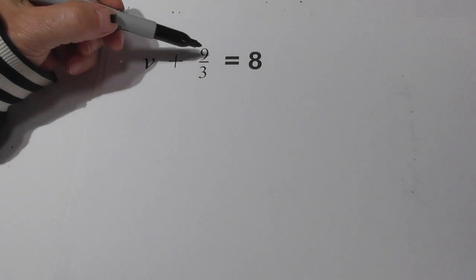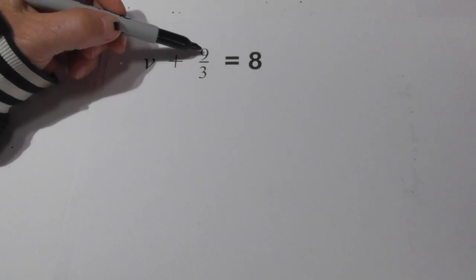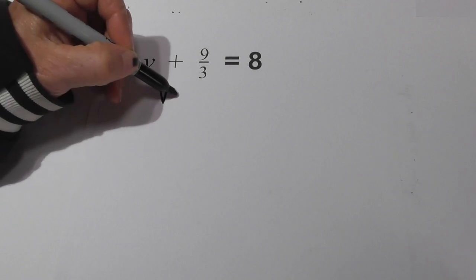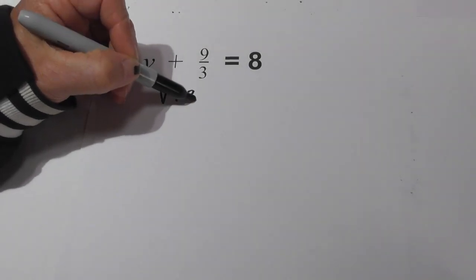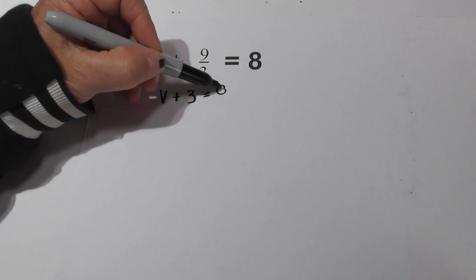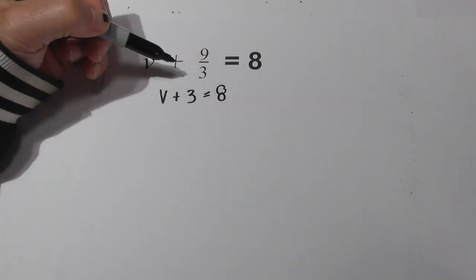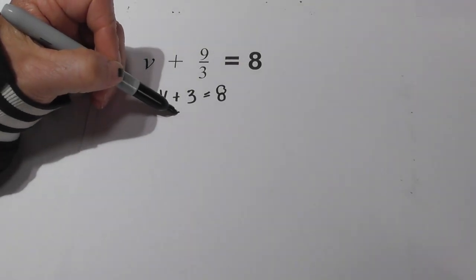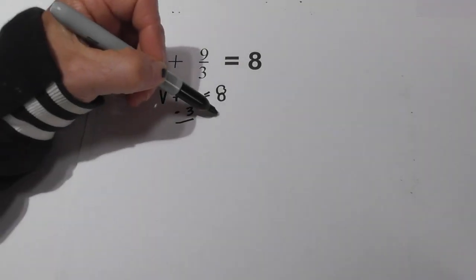To get started, what I'm going to do since this is an improper fraction, I'm going to divide the 9 by the 3. So it becomes v + 3 = 8. Now all we need to do is isolate the variable which is represented with a v by subtracting 3 from both sides.